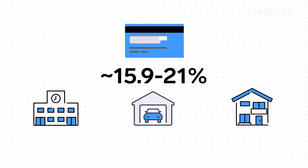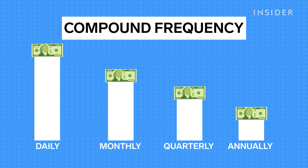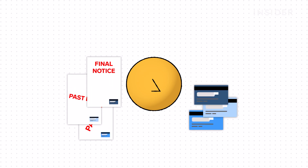The most extreme example of compound interest working against you is with credit cards. Credit cards typically charge the highest interest rates of any type of loan, with rates usually in the double digits. They also usually compound interest daily. Remember, the more often interest is compounded, the faster the balance grows. Compound interest is one reason many people advise against racking up credit card debt if you can help it. High interest rates that compound daily can become very expensive, especially if your initial balance is already large.